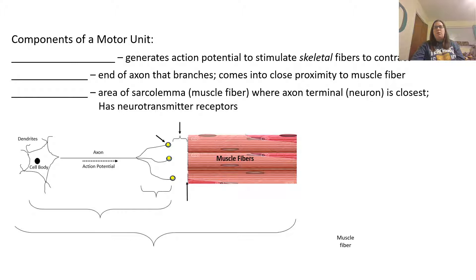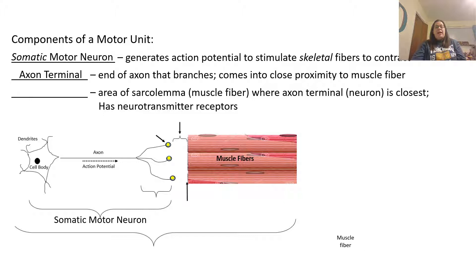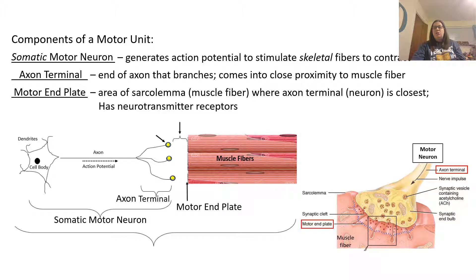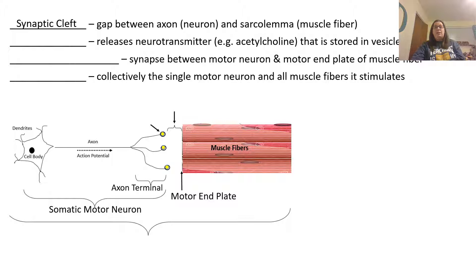Let's look at the components of a motor unit — how the nervous system talks to muscle fibers. A somatic motor neuron generates an action potential to stimulate skeletal muscle fibers to contract. It uses an axon terminal, which is the end of the axon that branches and comes into close proximity to the muscle fiber. The motor end plate is the area of the sarcolemma where the axon terminal is closest — they're not actually physically touching. The motor end plate is where the neurotransmitter receptors are located.